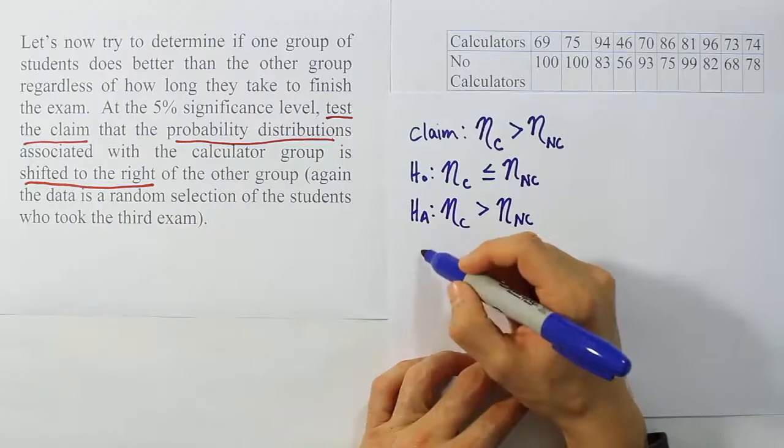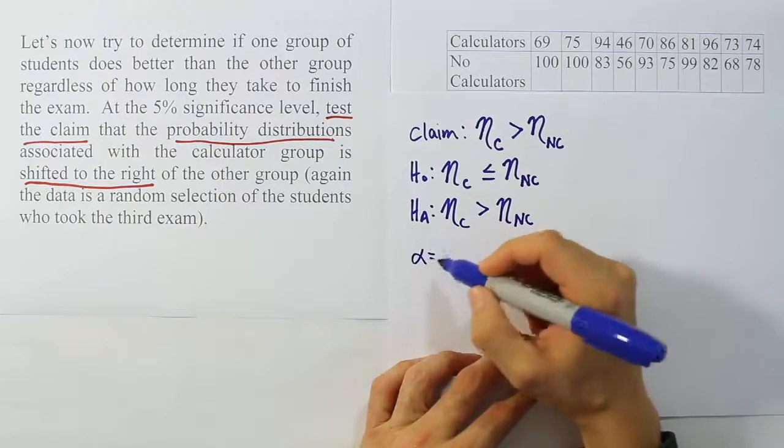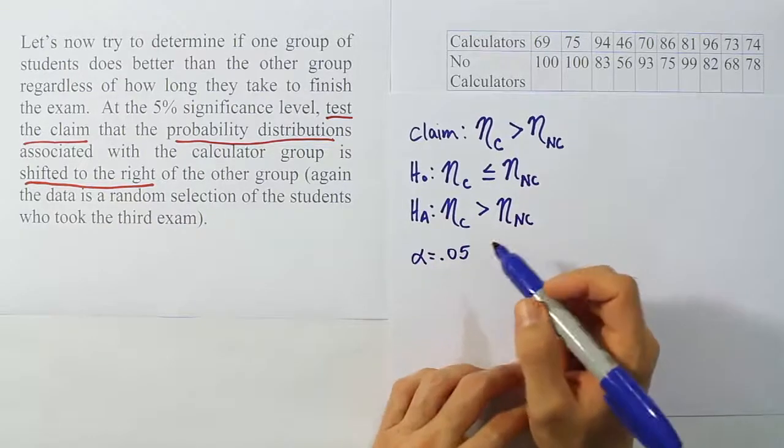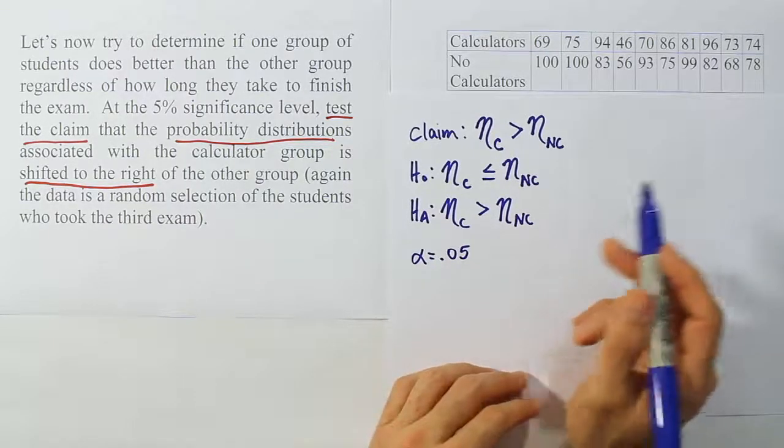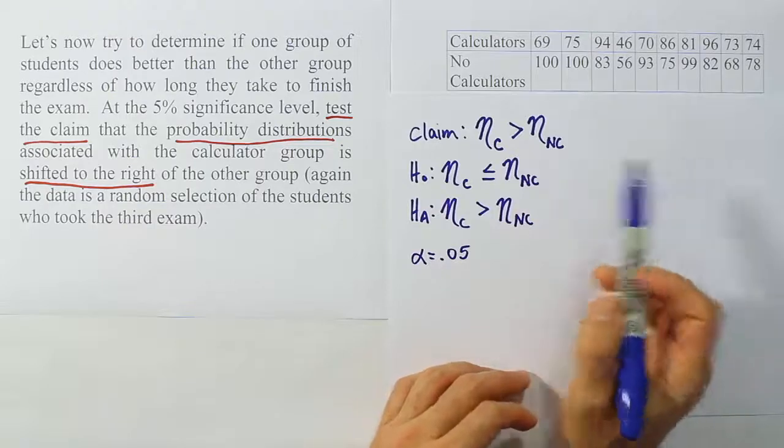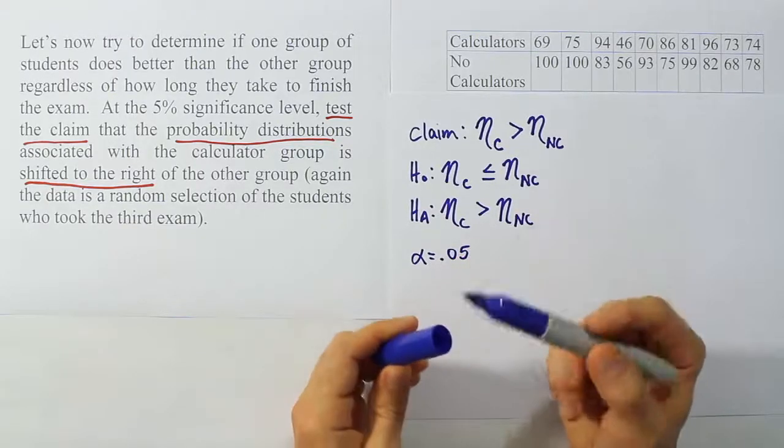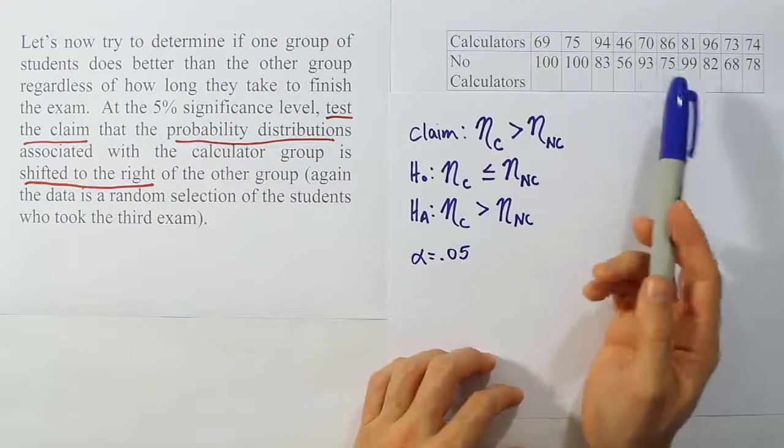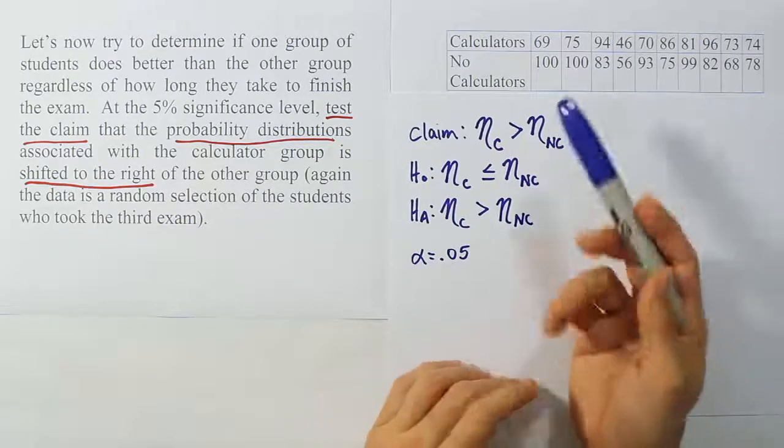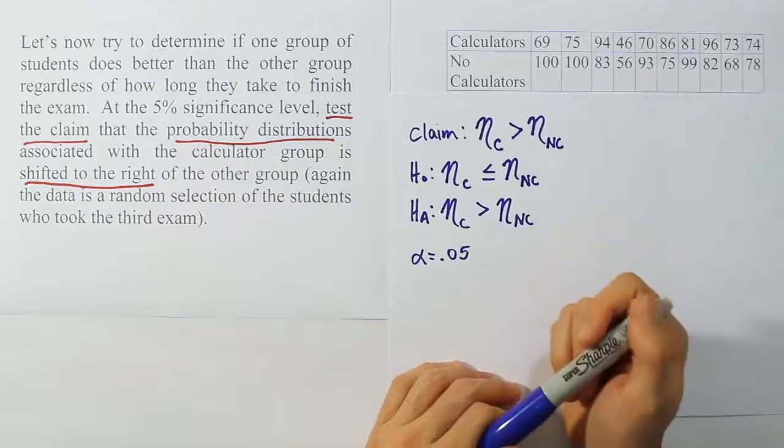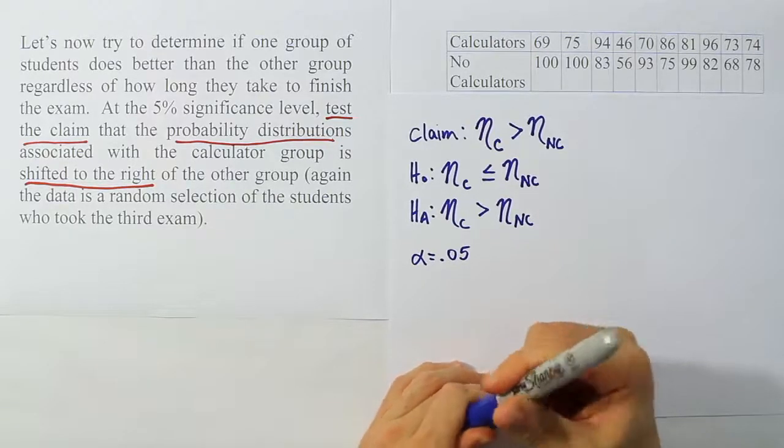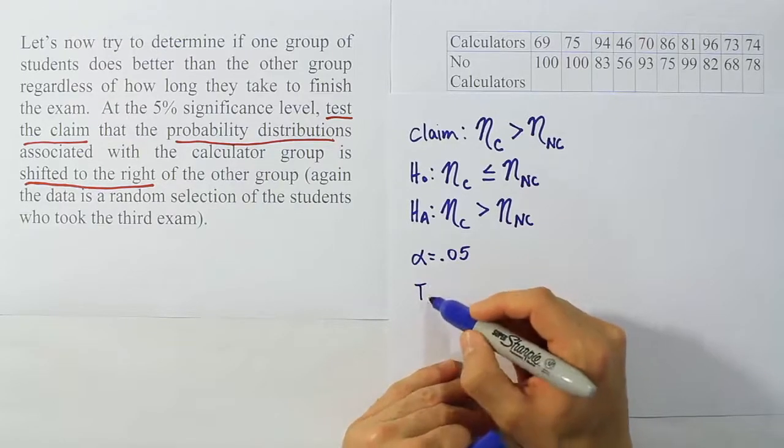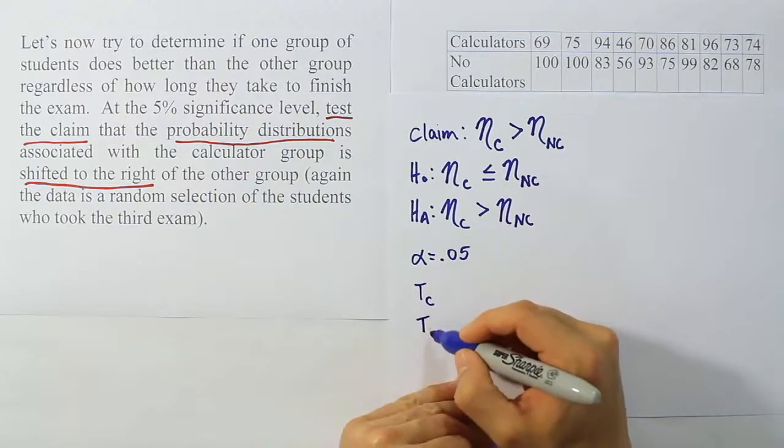Now for H₀, we'd be saying the median for the calculator group is less than or equal to the median for the non-calculator group. And again, why less or equal to? Because this symbol implies that the claim and Hₐ are the same here in this problem. So median for the calculator group is greater than the median for the non-calculator group would be the Hₐ. And so the H₀ has to reflect the opposite idea, which would be less than or equal to. All right, now let's jot down alpha for later use. So alpha is 0.05 in this problem. And what we want to do next is to actually come up with the rank total. So we have to rank all of this data.